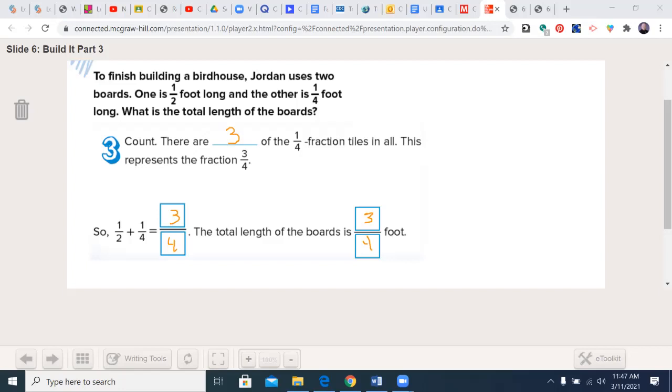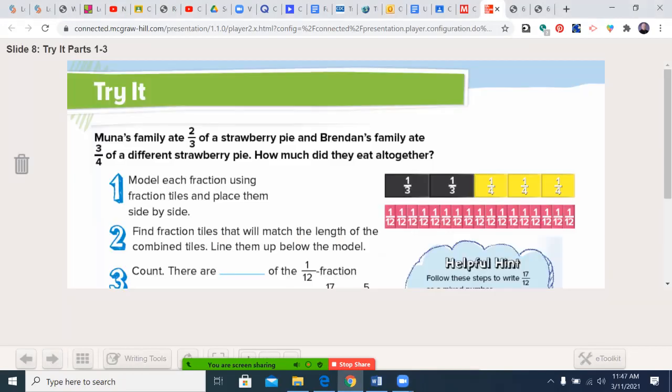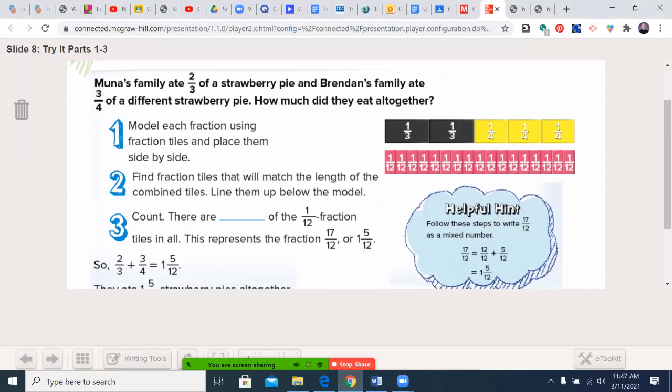All right, I'm going to go ahead and clear the screen. So we're looking at the triad here. Moon's family ate two-thirds of a strawberry pie, and Brendan's family ate three-quarters of a different strawberry pie. Here's the two. How much did they eat all together? So here's Moon's family, here's Brendan's family.